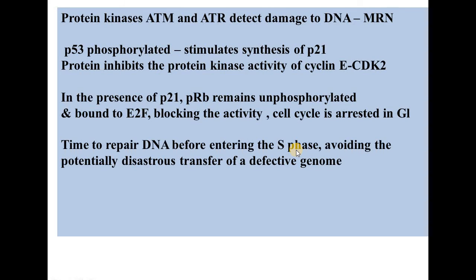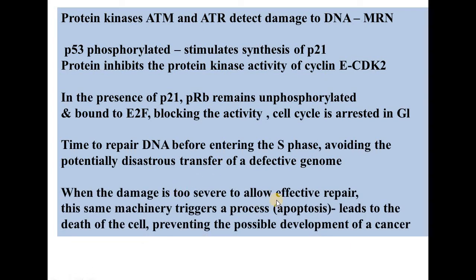This whole process — where p21 keeps retinoblastoma protein unphosphorylated, which binds E2F and blocks its activity — arrests the cycle at G1, giving time to repair DNA before entering S phase and avoiding the potentially disastrous transfer of a defective genome to one or more daughter cells. When the damage is too severe to allow effective repair, the same machinery triggers the process of apoptosis, which leads to cell death and prevents the possible development of cancer.